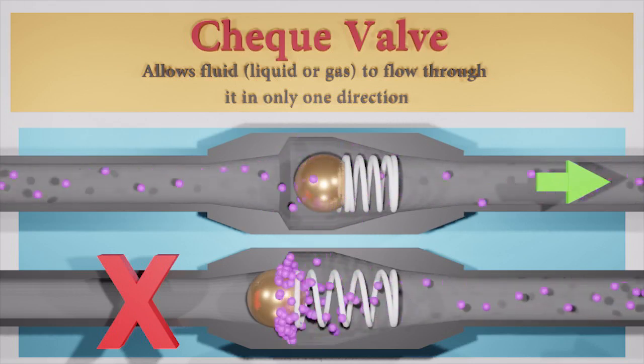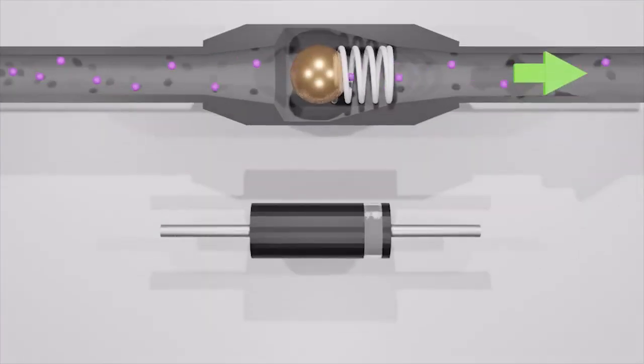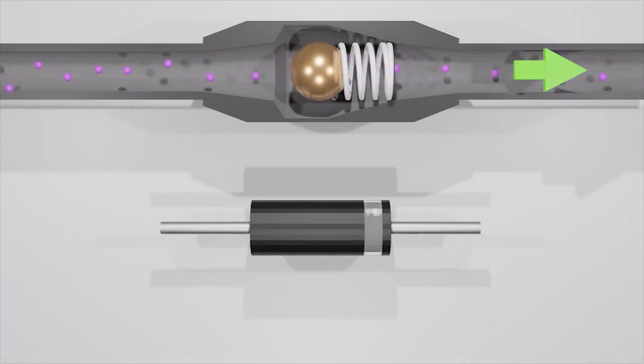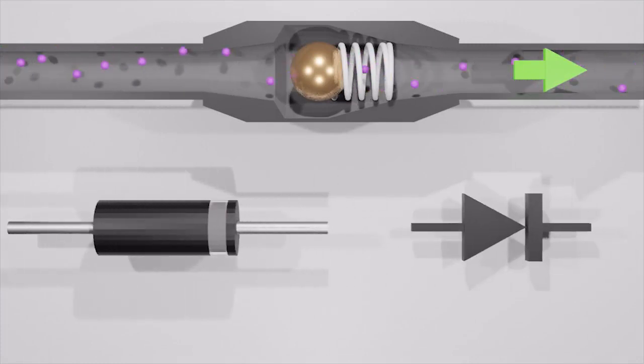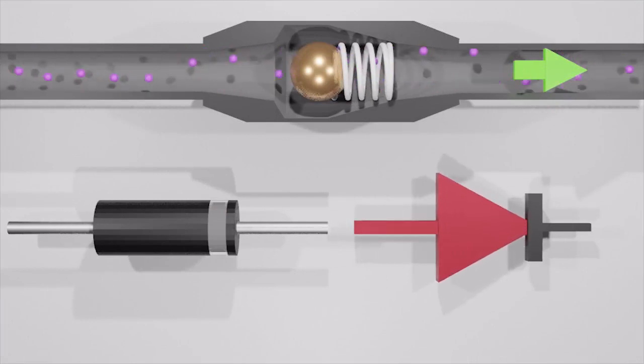Same as check valves, diodes are also pressure-operated devices. Electron pressure is called voltage. The most common kind of diode in modern circuit design is the semiconductor diode. Semiconductor diodes are symbolized in schematic diagrams such as this figure.